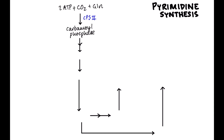In the urea cycle, we're taking different products — ATP, CO2, and NH3 (ammonia) — using an enzyme called CPS1, also making carbamoyl phosphate. CPS1 and CPS2 are totally different enzymes. You can be deficient in one and not the other. They have different reactants but the same product, so don't get confused there.